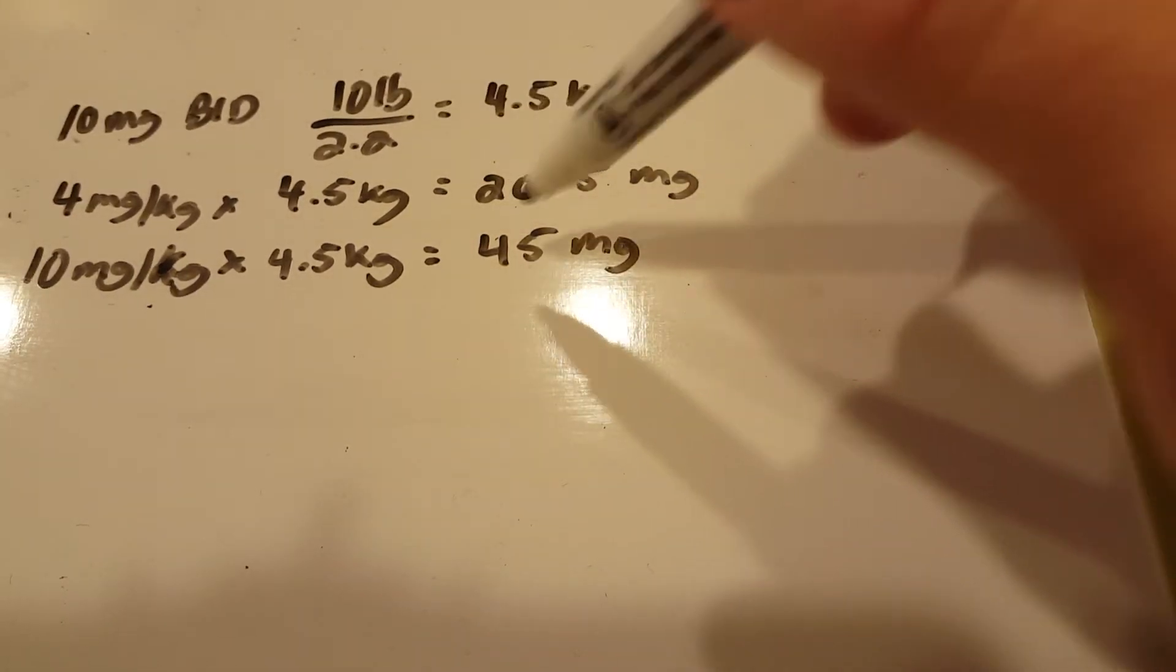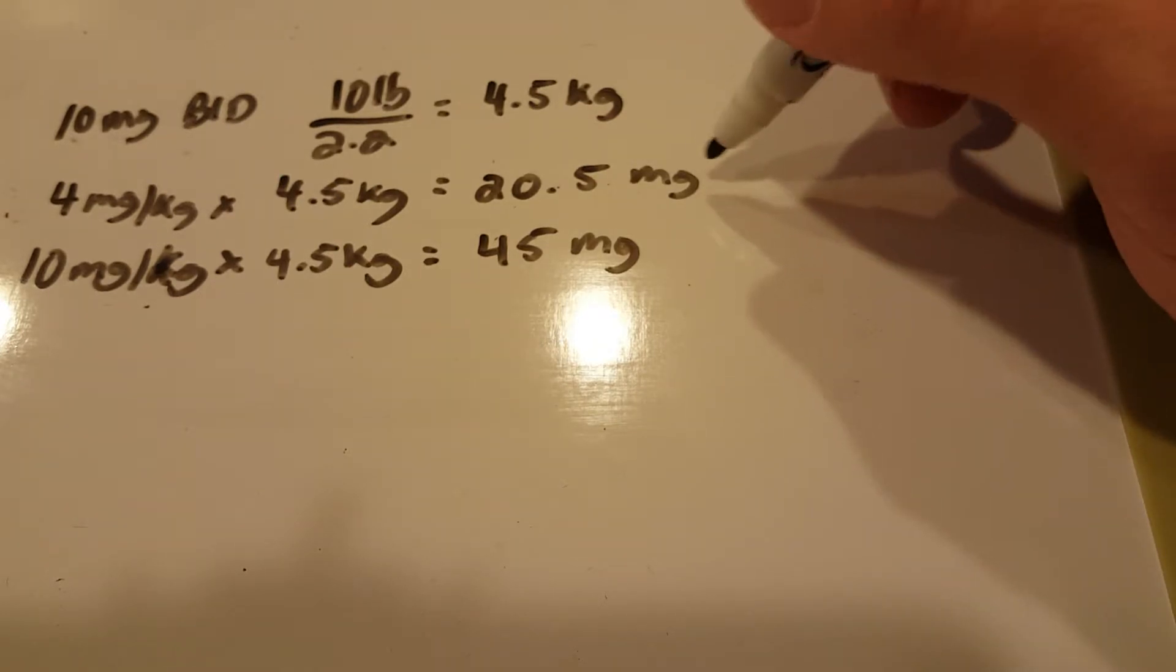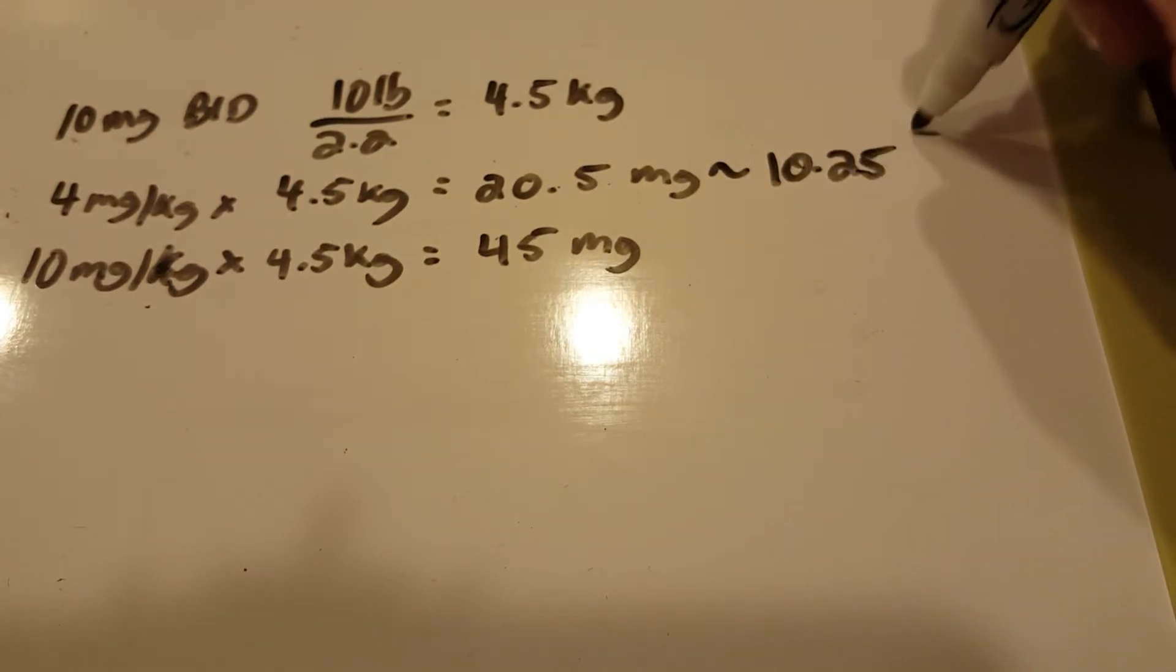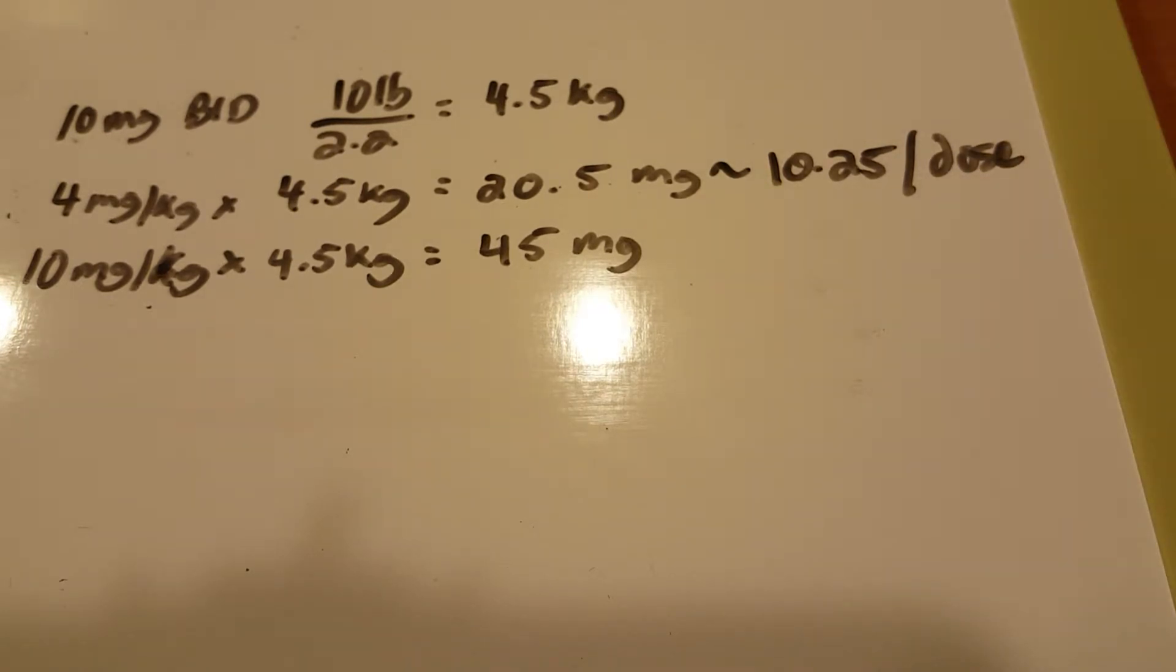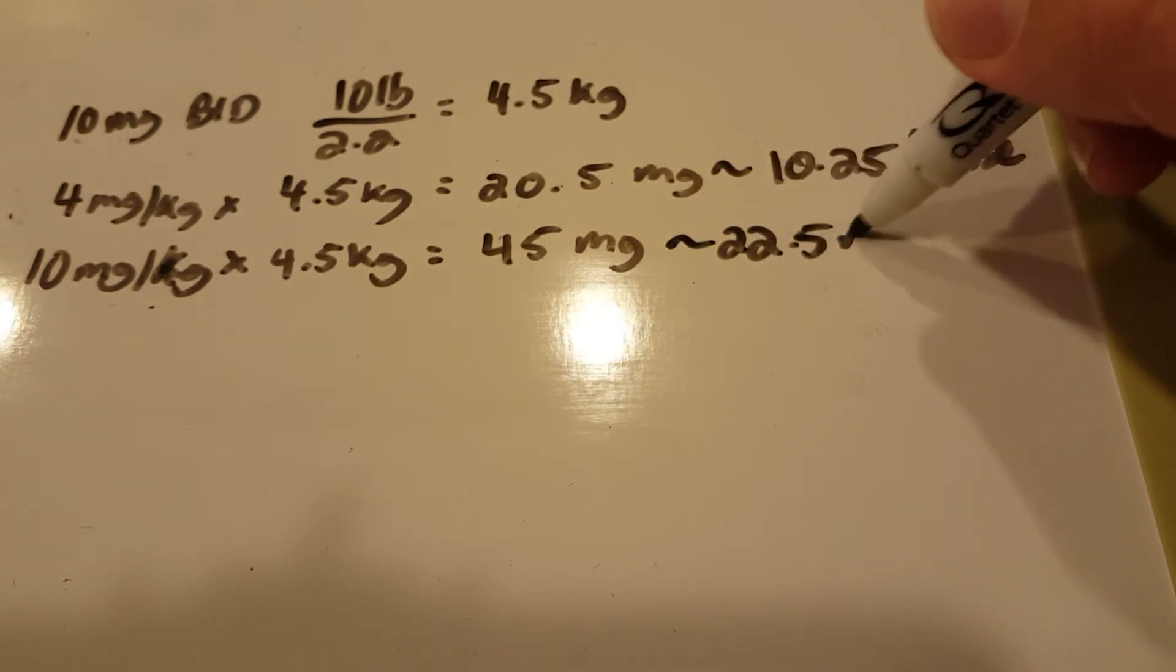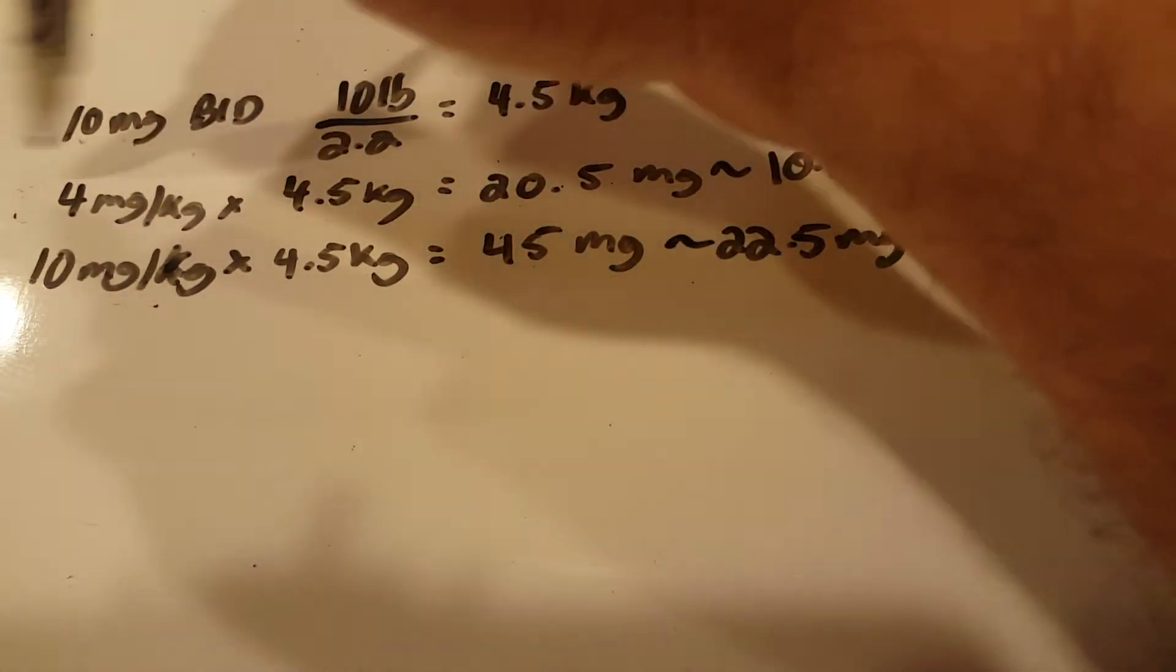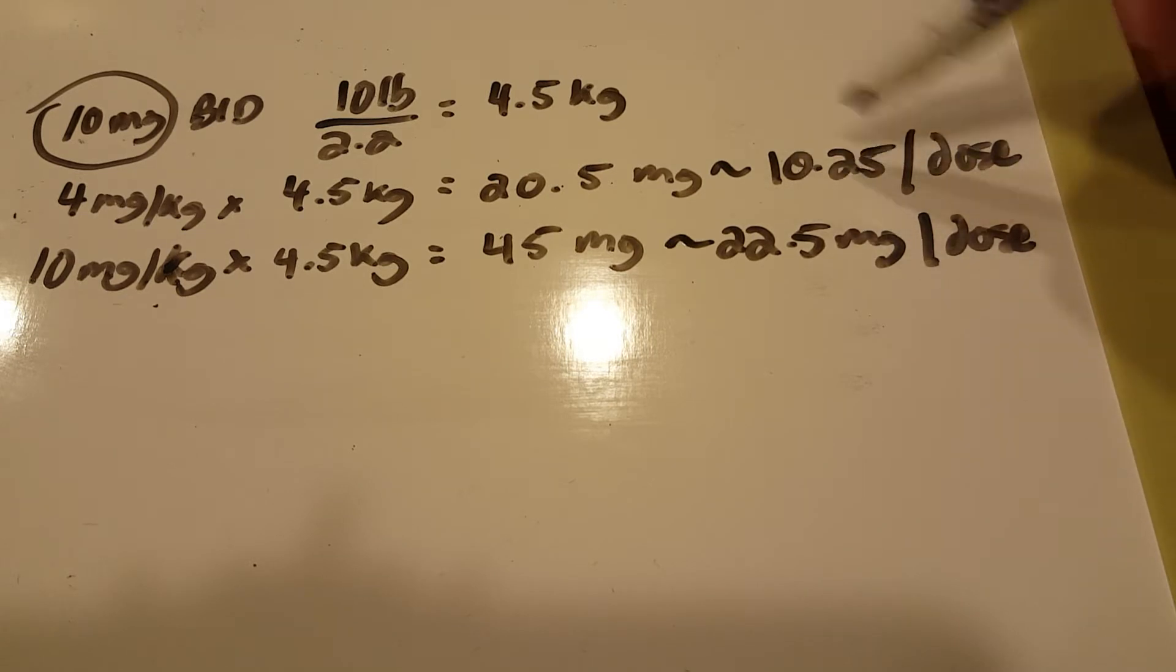What I would do then is take these numbers and divide by 2 to get my individual dosage range. So 20.5 divided by 2 is 10.25 milligrams per dose, and 45 divided by 2 would be 22.5 milligrams per dose. The order is 10 milligrams twice daily, and this says 10.25.